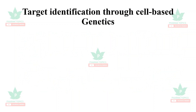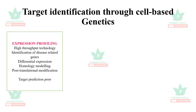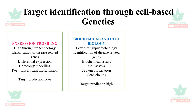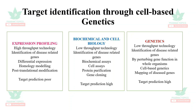Target identification through cell-based genetics: expression profiling uses high-throughput technology to identify disease-targeting genes, understanding differential expression, homology modeling, and post-translational modifications — but target prediction with this method is poor. Biochemical and cell-based biology is a low-throughput technology that identifies genes related to biochemical pathways using biochemical assays, cell assays, protein purification, and gene cloning — target prediction is high. Genetics is also low-throughput, identifies disease-related genes, and perturbs gene function in whole organisms — target prediction is also high.